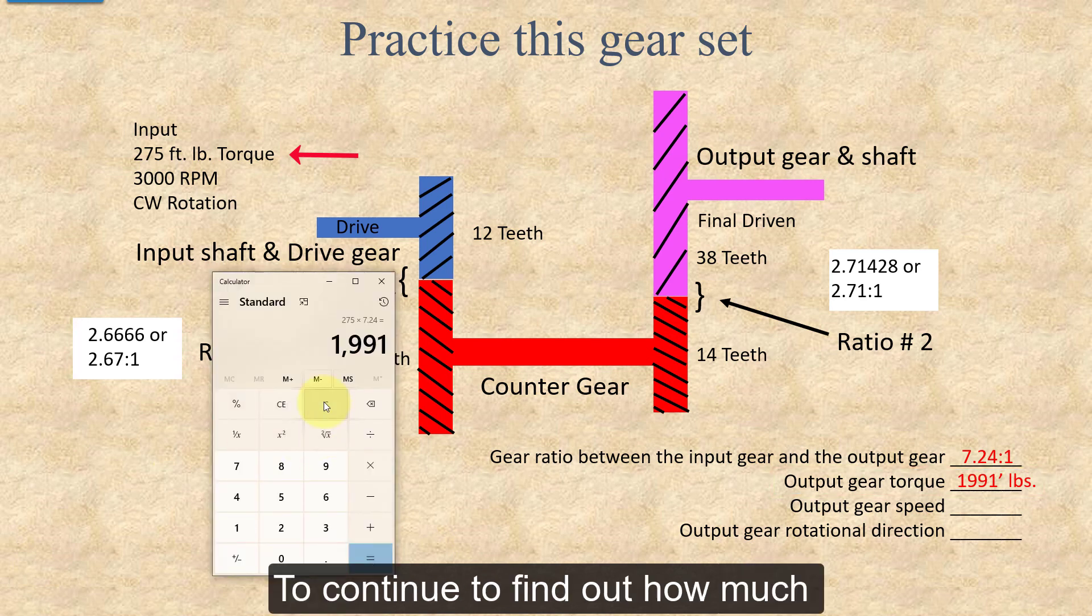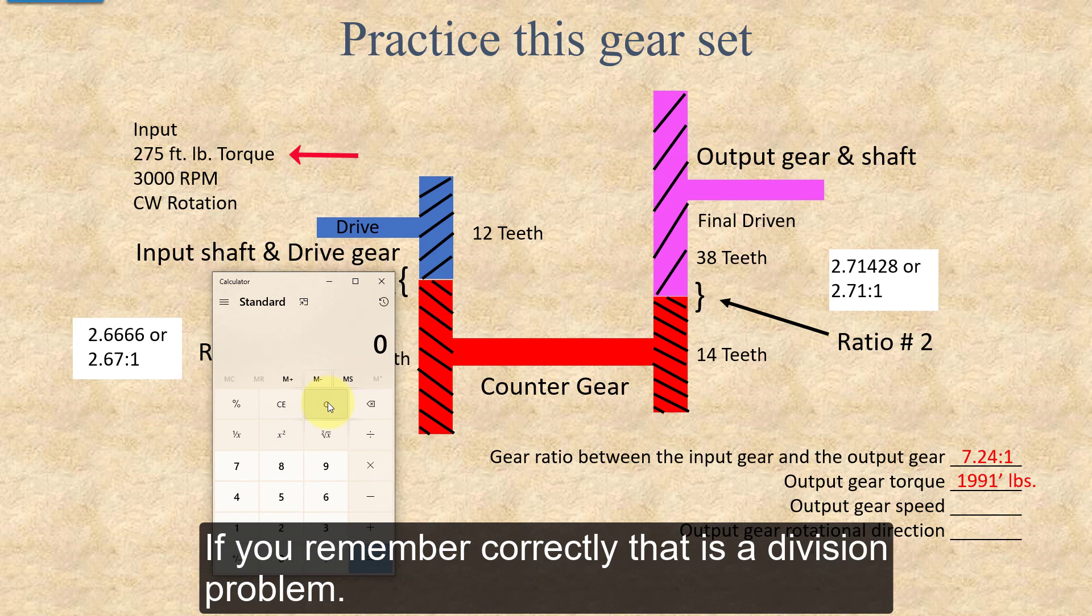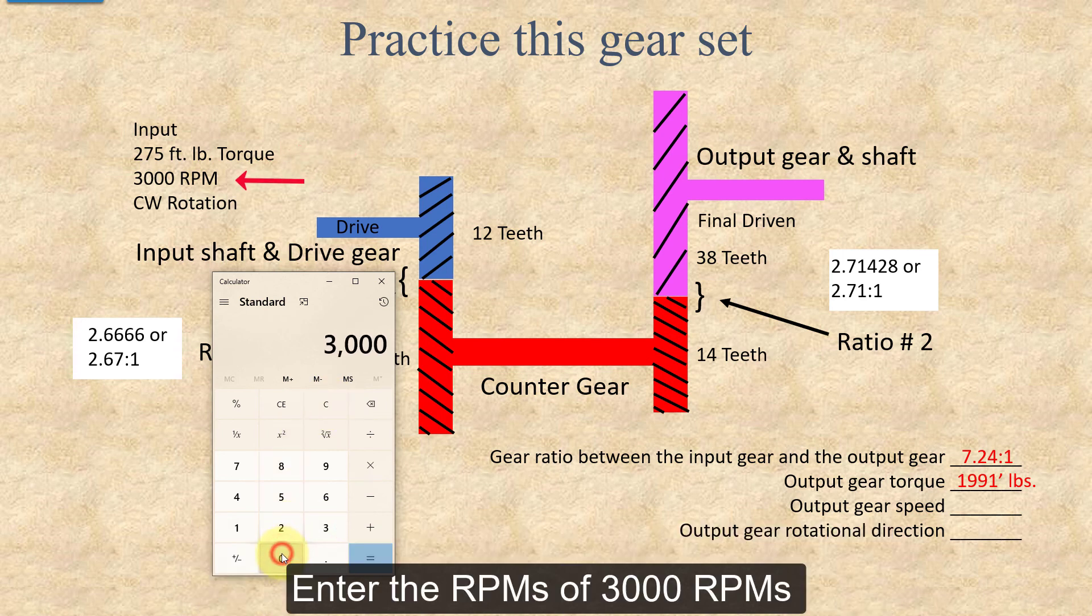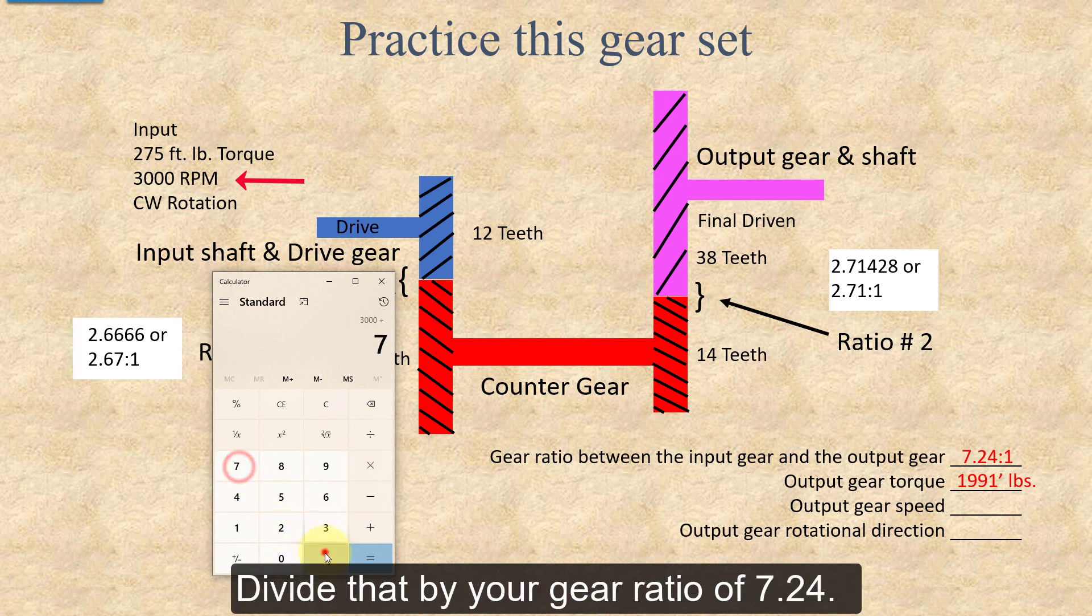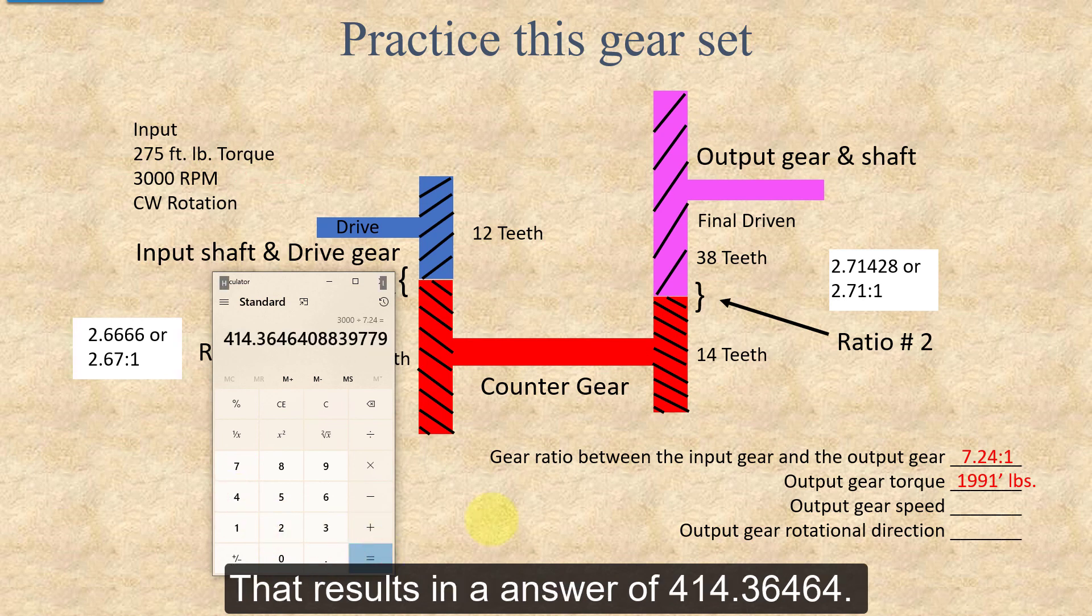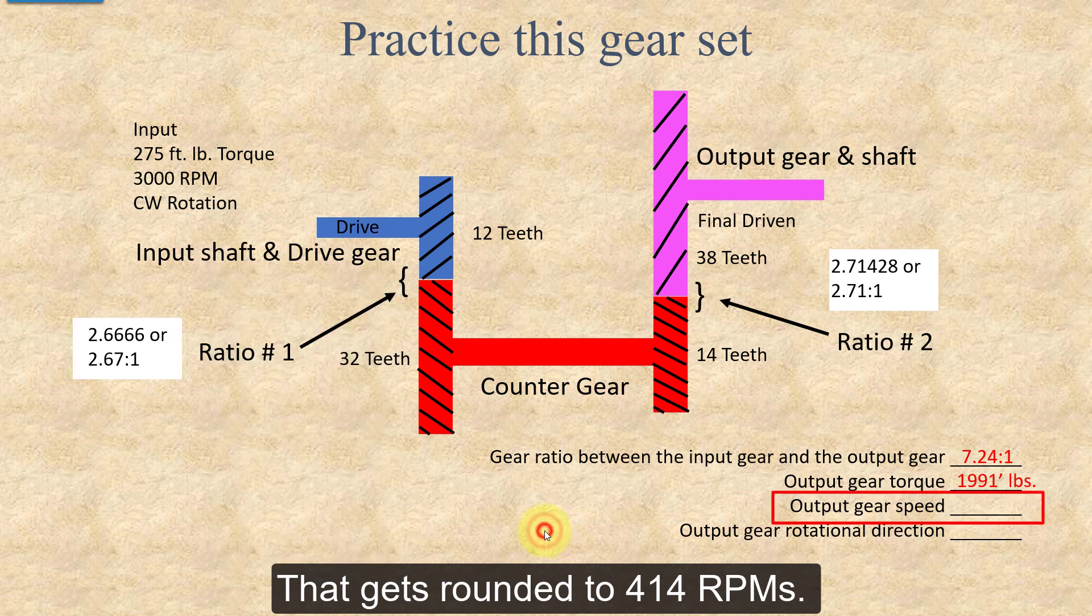To continue to find out how much RPM change takes place on the driven gear, if you remember correctly that is a division problem. Enter the RPMs of 3000 RPMs being put into the input gear, divide that by your gear ratio of 7.24. That results in an answer of 414.36464. That gets rounded to 414 RPMs.